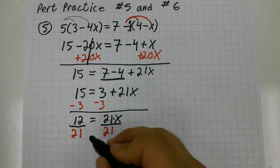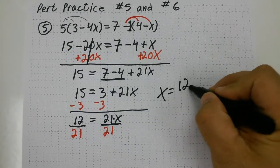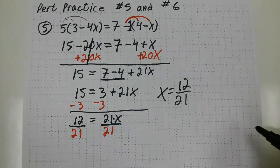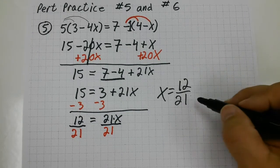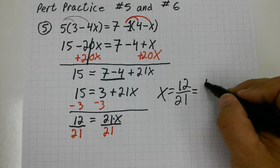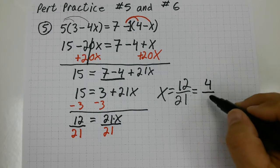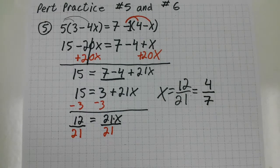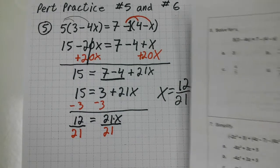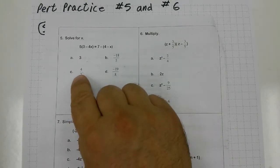So x equals 12 over 21. I believe a 3 goes into both of these. So 3 goes into 12 four times, and 3 goes into 21 seven times. And that matches up with one of the choices from the PERT multiple choice practice test. I believe that would be choice C.